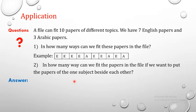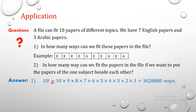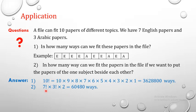For the first part of the application, the answer is 10 factorial. According to our rule of permutation, we can fit them in 10! = 3,628,800 ways. For the second part, it is 7! for English times 3! for Arabic times 2, giving 60,480 ways.